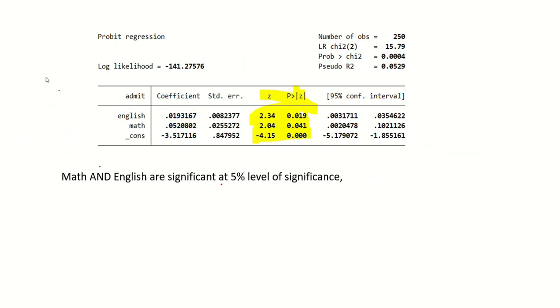Then we have the value for z-test and p-value of z-test. We can see that the p-value for all variables is less than 0.05, so we will say that math and English are significant at 5% level of significance.